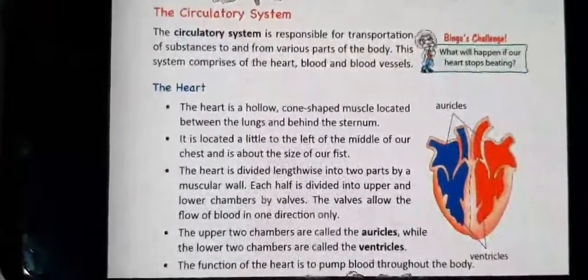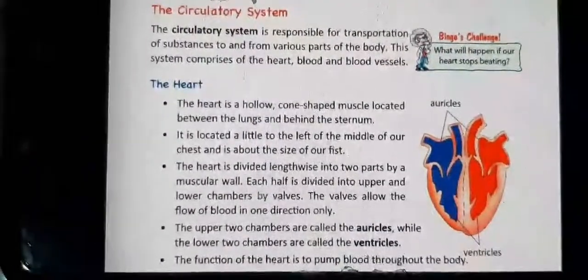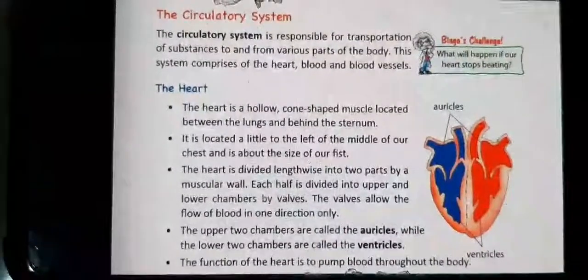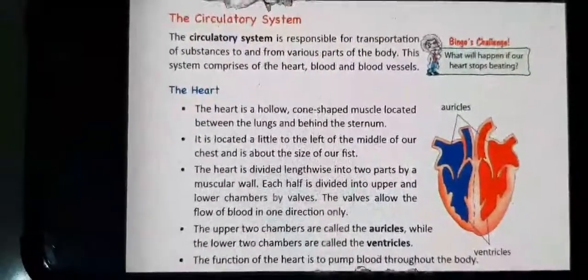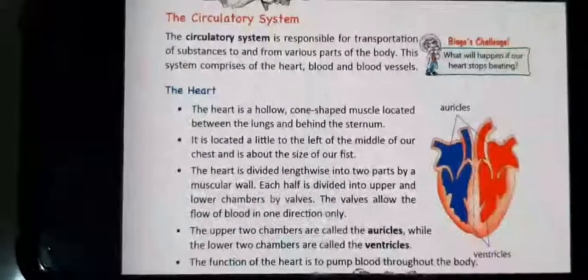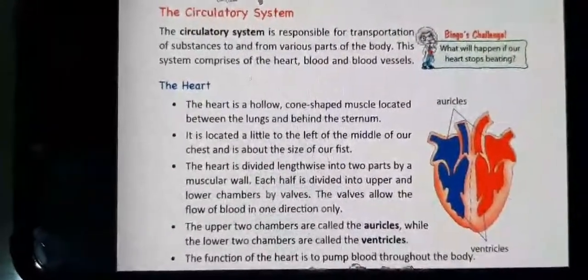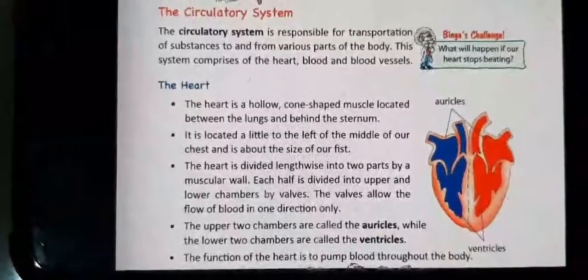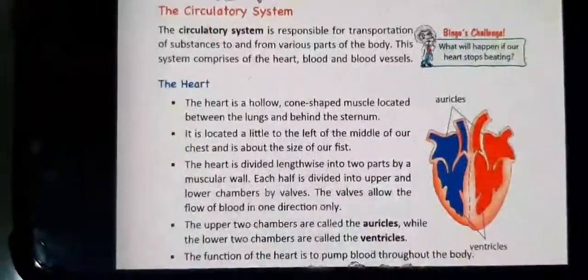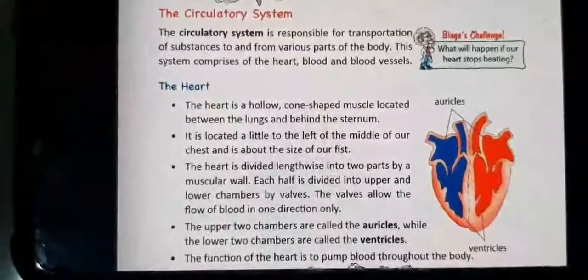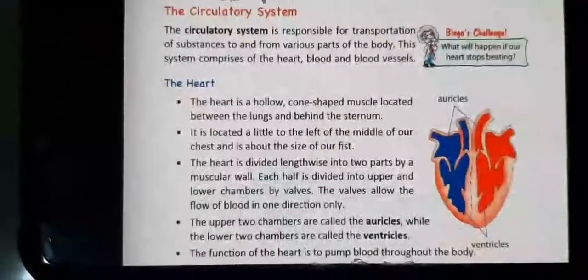The heart is divided lengthwise, that is vertically, into two parts by a muscular wall. Each half is divided into upper and lower chambers by walls. Walls are like a water tap valve which allows the flow of blood in one direction only. This way the heart is divided into four parts. The upper two chambers are called auricles and the lower two chambers are called ventricles.